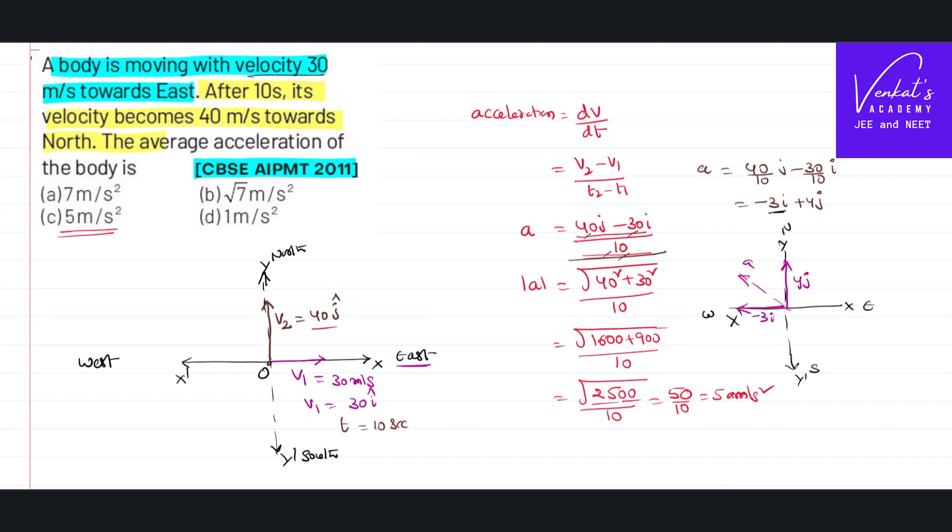With the negative x-axis, so I can write tan theta as y component by x component, that is 4 by 3. Theta equals tan inverse of 4 by 3.